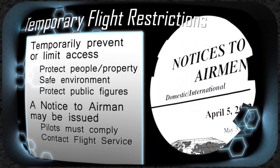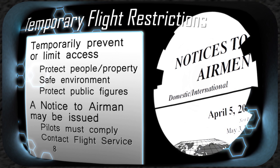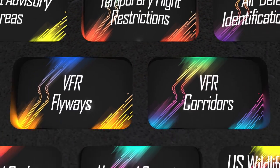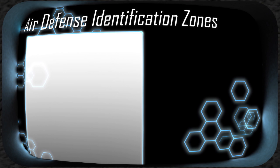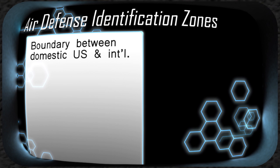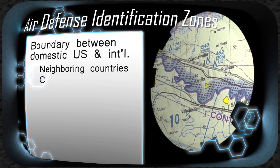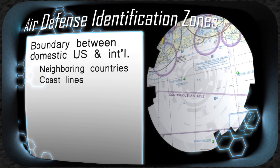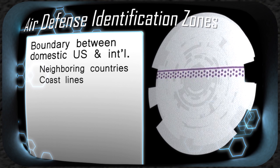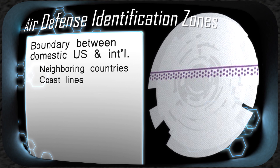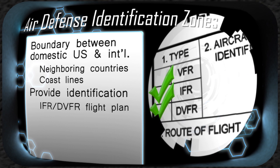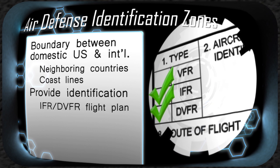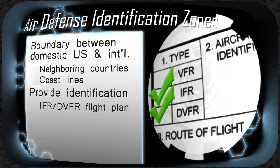Contact the local flight service station for the most up-to-date information by calling 1-800-WX-BRIEF. Air Defense Identification Zones, or ADIZs, serve as the boundary between domestic U.S. airspace and international airspace. They are located over the borders of neighboring countries and along the coastlines. Sectional charts depict these with a magenta line and dots. All aircraft entering U.S. airspace from outside the country must provide identification prior to entry. Generally, aircraft must file an IFR or Defense VFR flight plan for any operations that enter or exit an ADIZ.